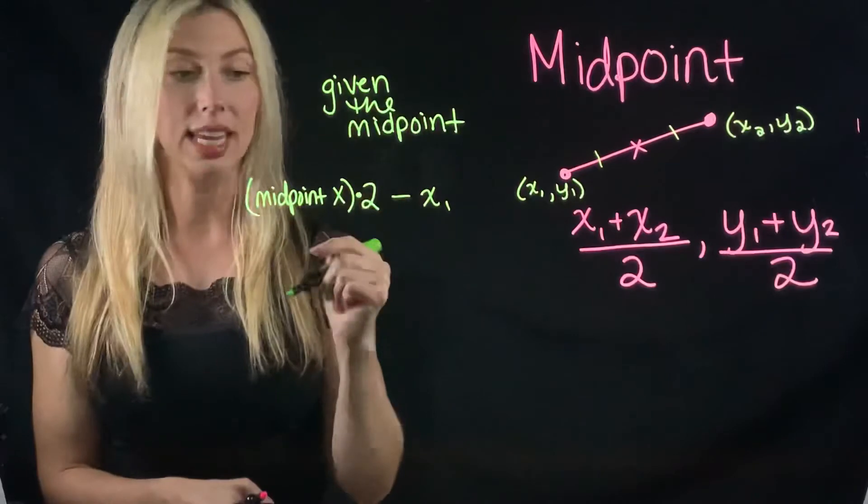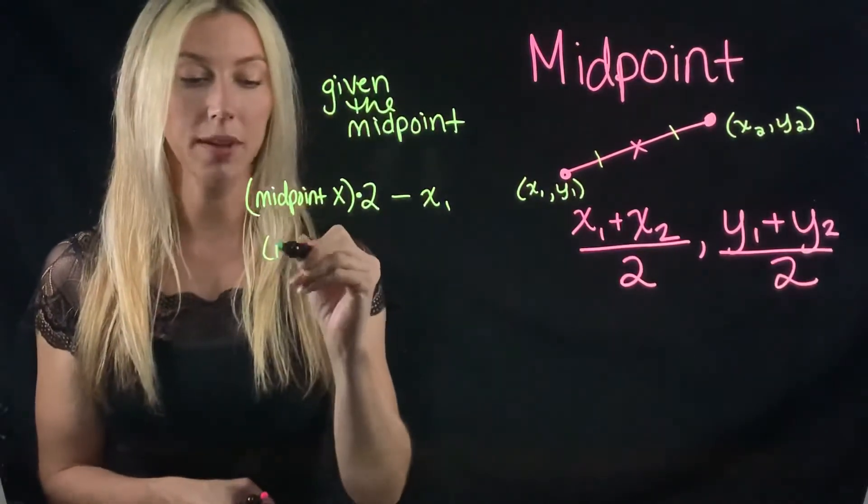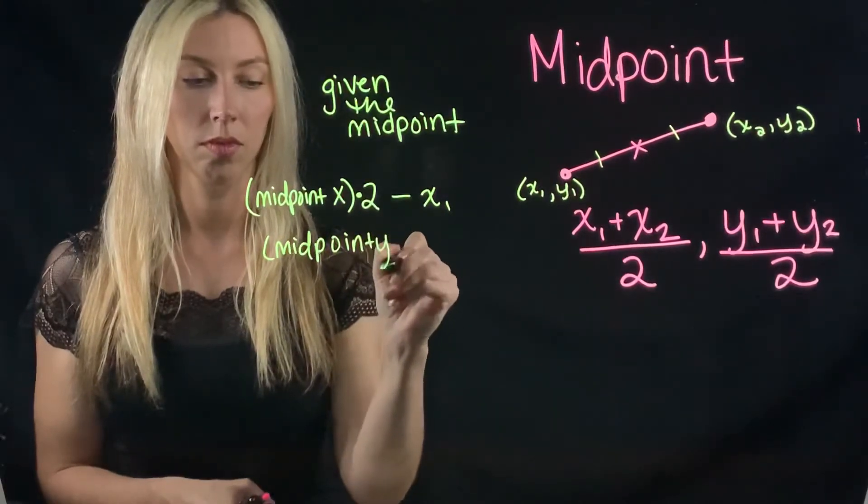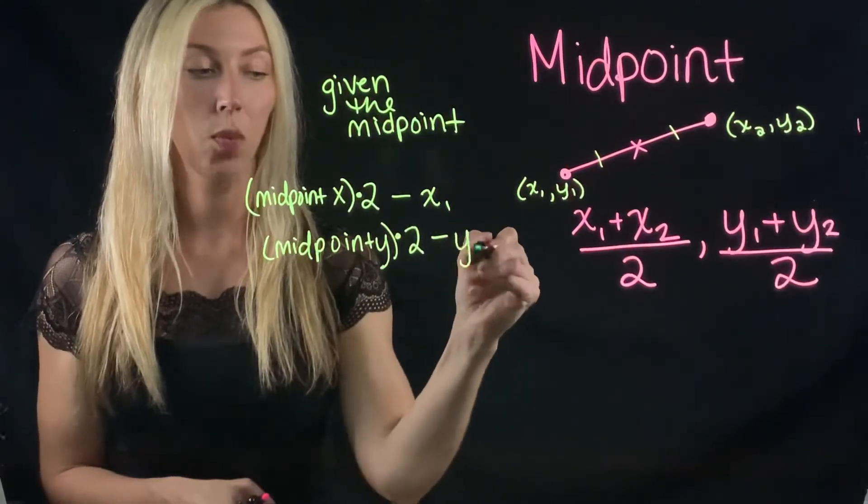And that will work the same way for the y coordinate. You're going to take the y midpoint, multiply it by two, and then subtract y1.